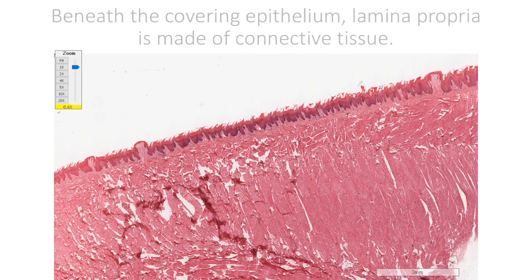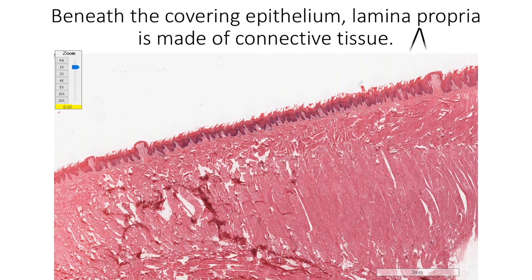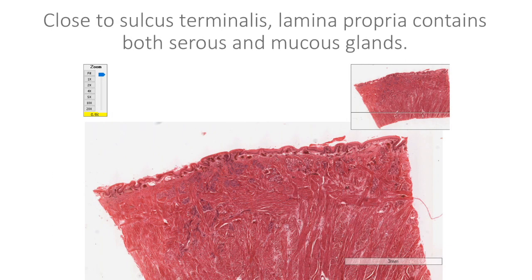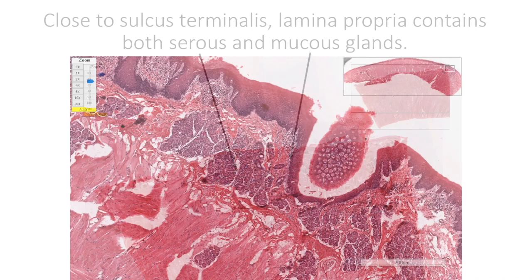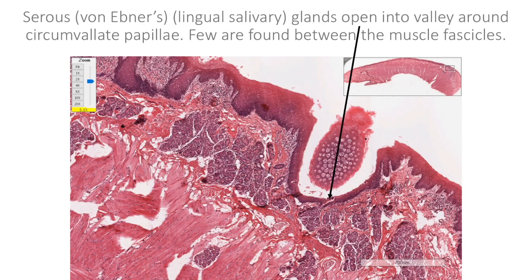Beneath the covering epithelium, the lamina propria is made up of connective tissue. Close to the sulcus terminalis, the lamina propria contains both serous and mucous salivary glands. The serous salivary glands (von Ebner's glands) open into the valley around the circumvallate papillae. A few of these glands are found even between the muscle fascicles.